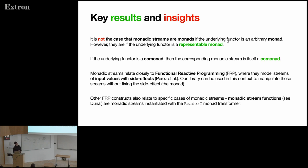So, some other insights that we got from our work. It's not the case that monadic streams are monads if the underlying functor is just any arbitrary monad. We found that it does work if the underlying functor is a representable monad. But we're not exactly sure what structure is necessary and sufficient for this property. If the underlying functor is a co-monad, then the corresponding monadic stream is also a co-monad. And on a practical note, we'd like to look further into how monadic streams relate to functional reactive programming, where monsters can be used to represent streams of effectful inputs to a reactive program. I think Ivan Perez and others have done work similar to this with a Haskell library called DUNAI.